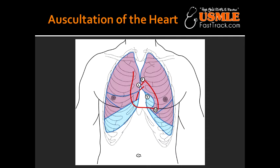What is the mnemonic to help you remember the four areas? The mnemonic is APTM: A stands for aortic area, P stands for pulmonary area, T stands for tricuspid area, and M stands for mitral area.